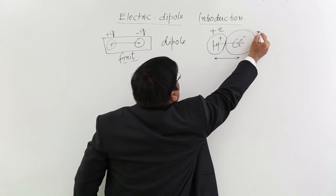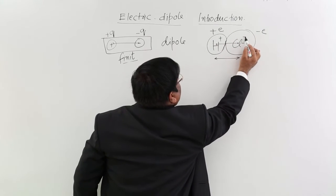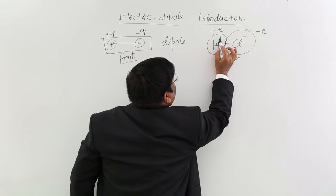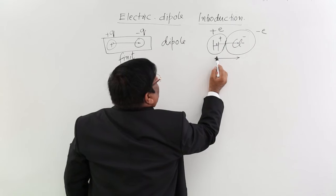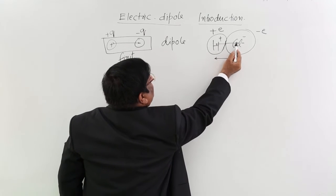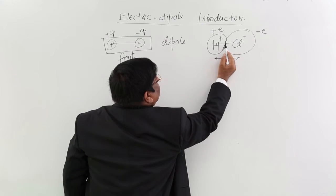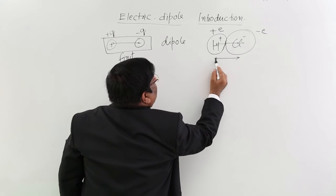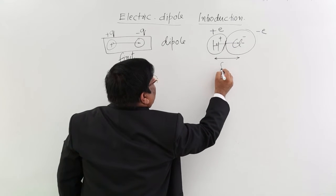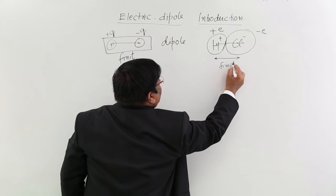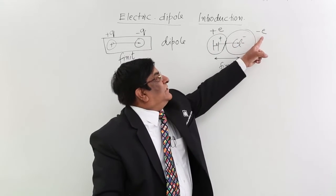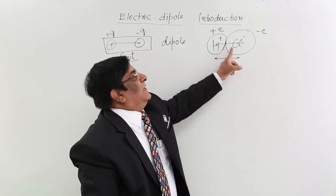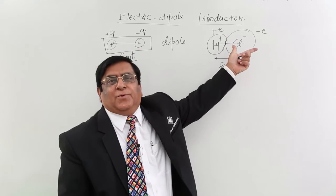this has got charge minus E because it has lost one electron—plus E; it has gained one electron—minus E. So there is a force between the two and they stick to each other, so this becomes a definite, or finite, distance. So equal and opposite charges at a finite distance makes a dipole.